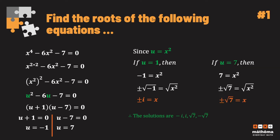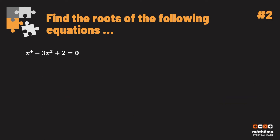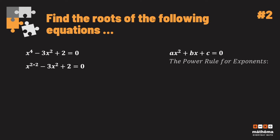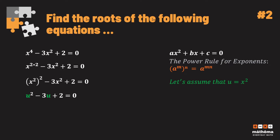For example two, find the roots of x⁴ − 3x² + 2 = 0. Notice this equation can be expressed in the form ax² + bx + c = 0. We rewrite it as (x²)² − 3x² + 2 = 0. Again assuming u = x², we get u² − 3u + 2 = 0, which is now a quadratic equation we can solve using the methods learned.